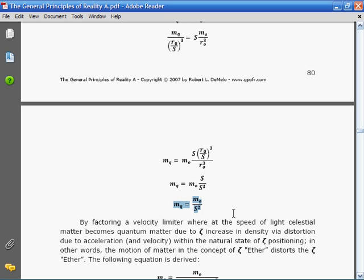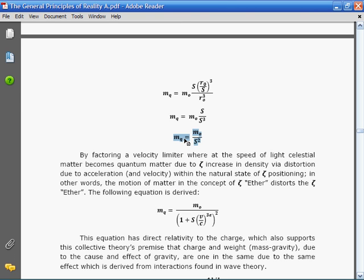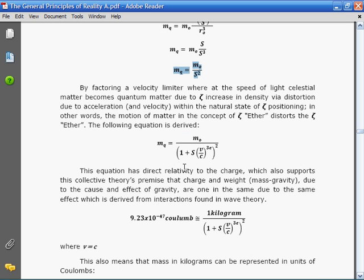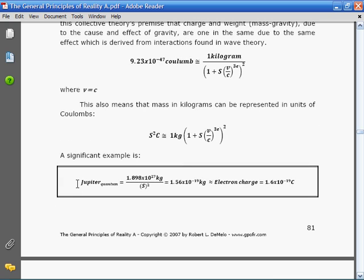Several months later, I made another discovery which I think was hugely significant and validated the initial premise that Jupiter and gas giants were electrons at the celestial scale. I grabbed Jupiter's mass and divided it by S squared, which was the mass equation, and I got 1.56 times 10 to the negative 19 kilograms. That value was very close numerically to 1.6 times 10 to the negative 19 coulombs, which is an electron charge.